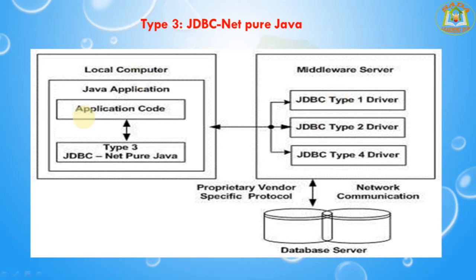On the local computer, the Java application interacts with the Type 3 driver — the Net Pure Java driver. This Type 3 driver can in turn interact with any one of the other driver types: it may be a Type 1 driver, a JDBC Type 2 driver, or a JDBC Type 4 driver. These drivers then communicate with the database server. This type of driver is called the Net Pure driver.